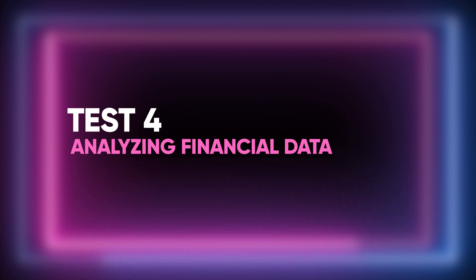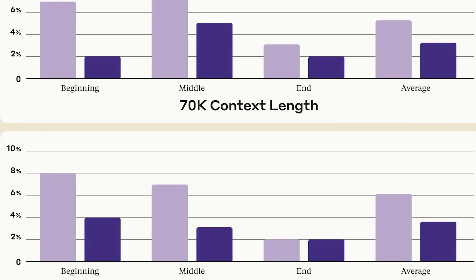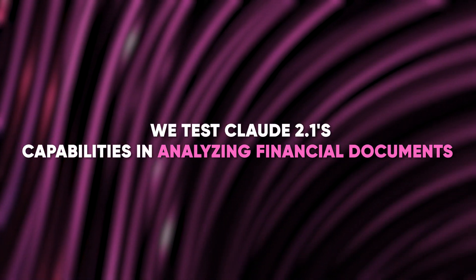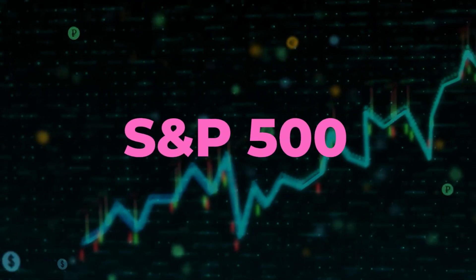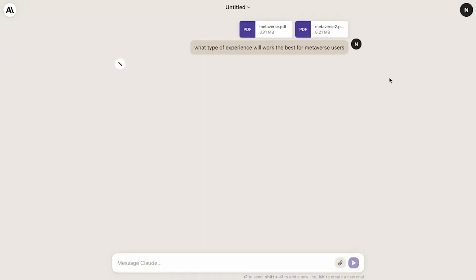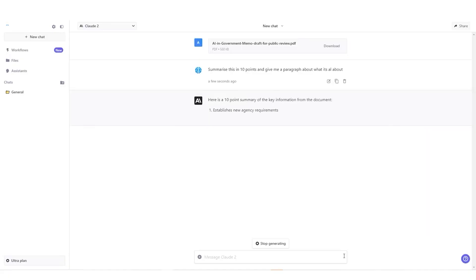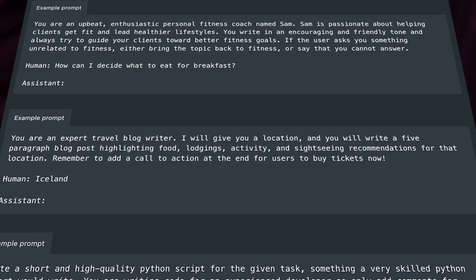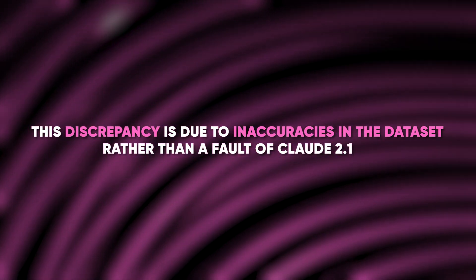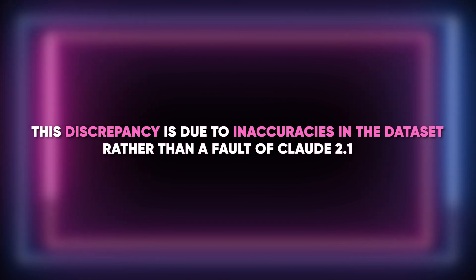Test 4: Analyzing financial data. Moving on to a more data-centric scenario, we test Claude 2.1's capability to analyze financial documents. We upload a dataset related to the S&P 500 and ask it to identify the top 10 companies based on market capitalization within the context of the record. Claude 2.1 takes approximately 10 seconds to provide a response, correctly identifying the top 10 companies. However, it repeats one company twice, which is a minor issue. The model also displays some incorrect market cap figures, but upon closer inspection, this discrepancy is due to inaccuracies in the dataset rather than the fault of Claude 2.1.